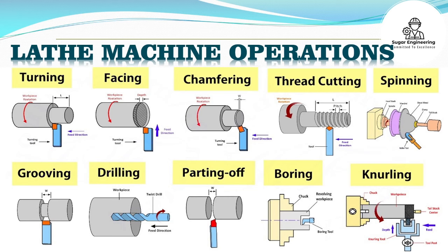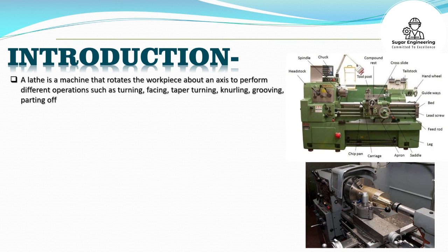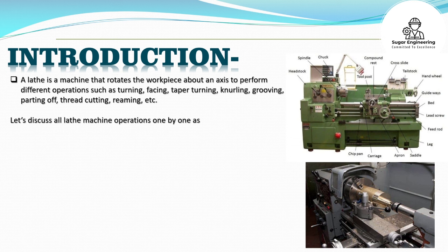Lathe Machine Operations. A lathe is a machine that rotates the workpiece about an axis to perform different operations such as turning, facing, taper turning, knurling, grooving, parting off, thread cutting, reaming, etc.